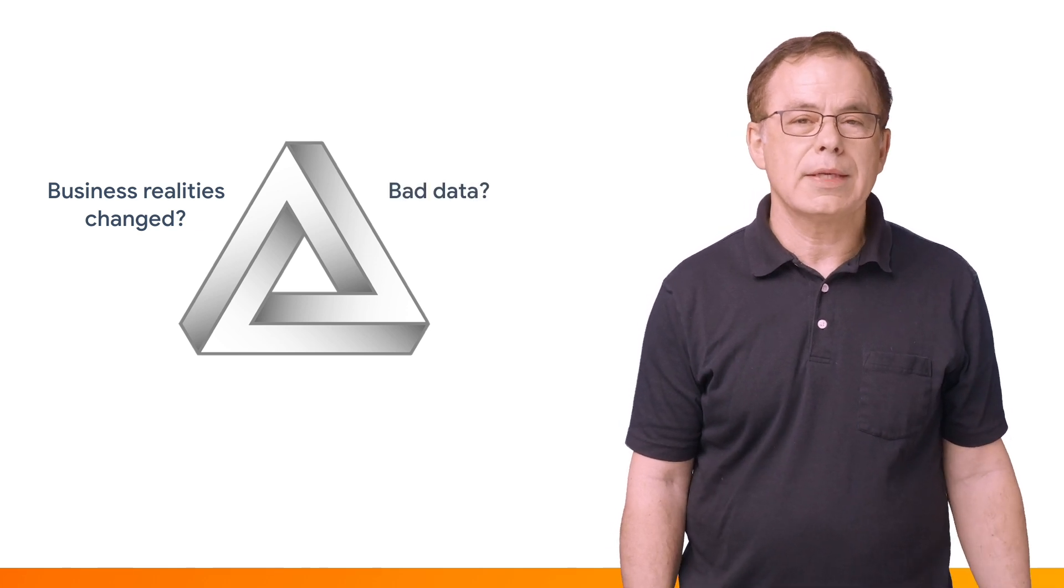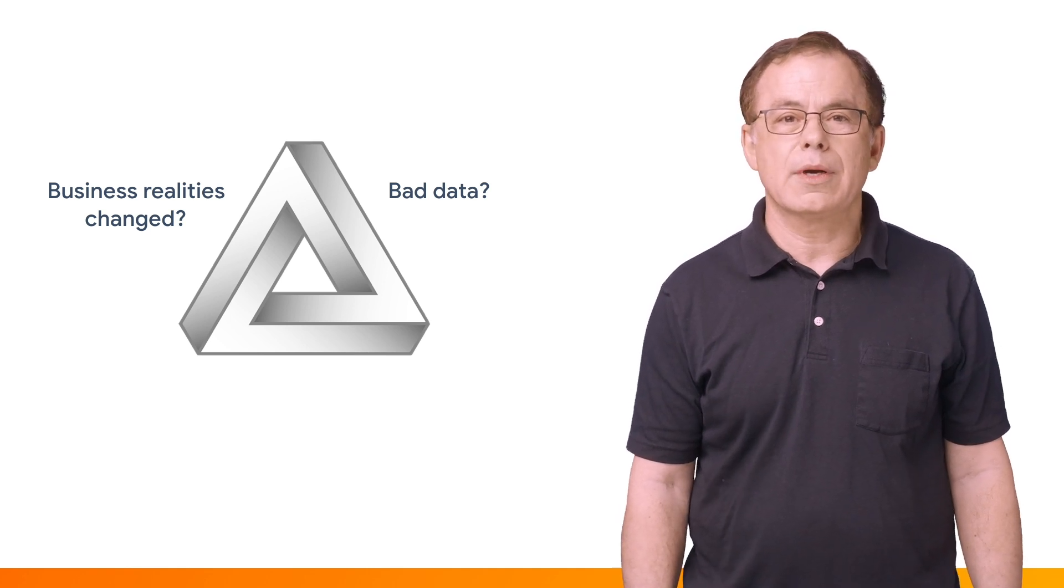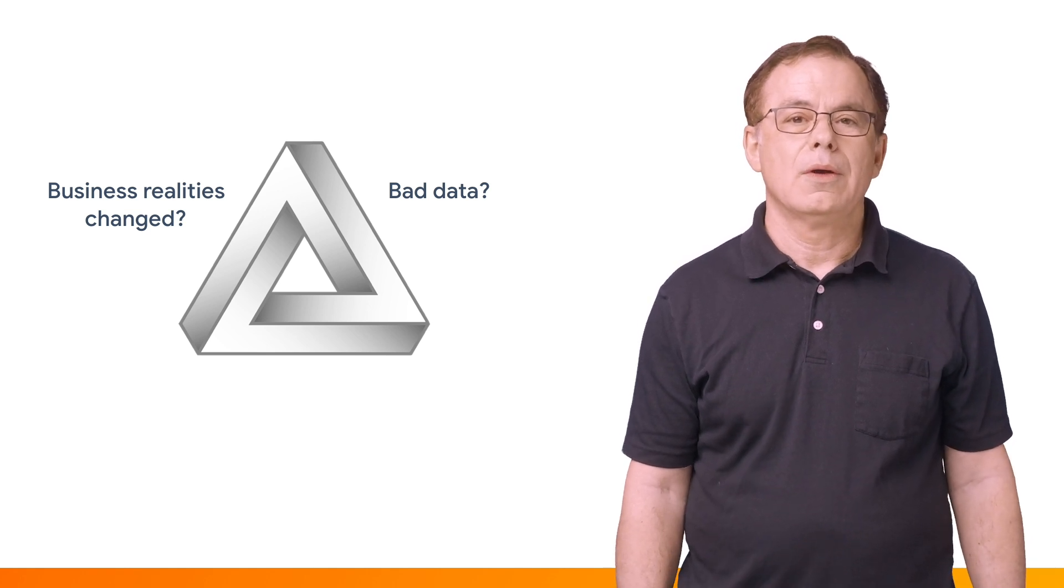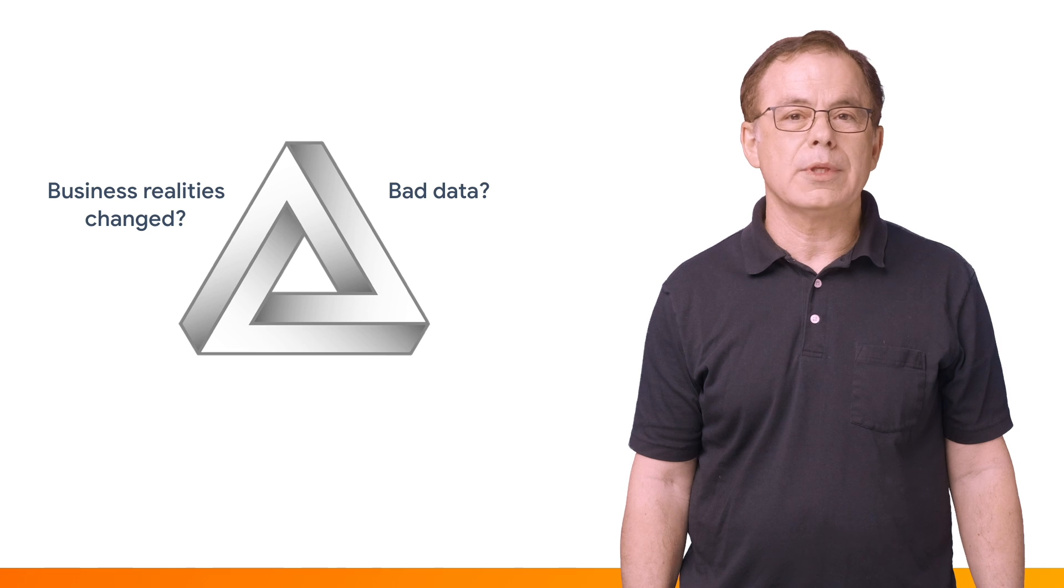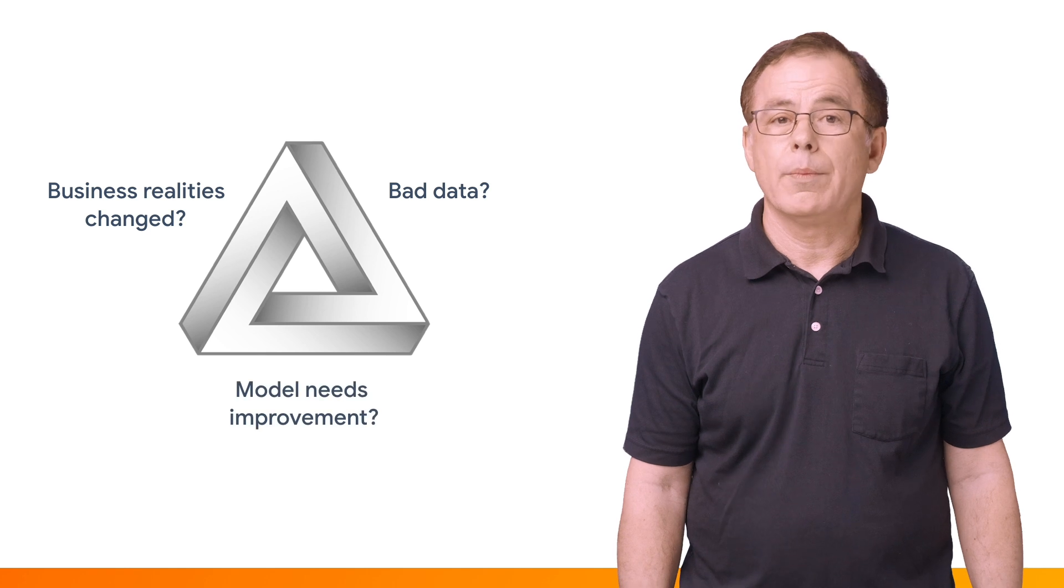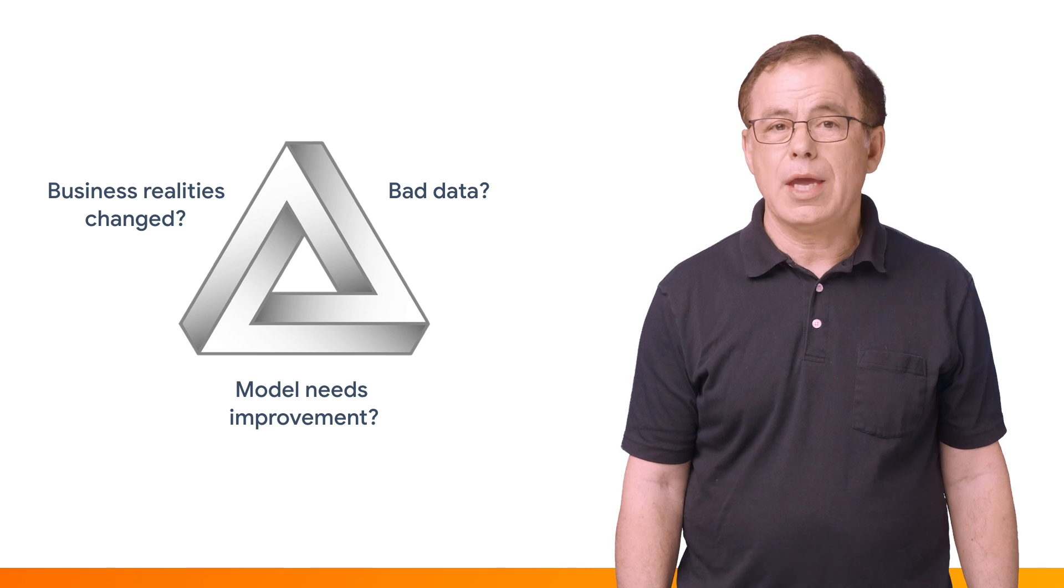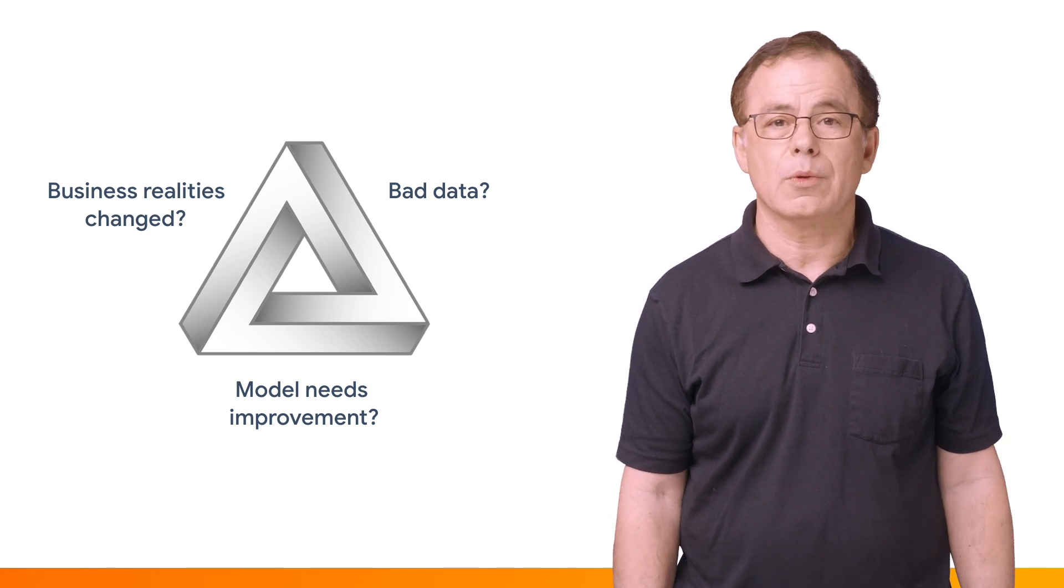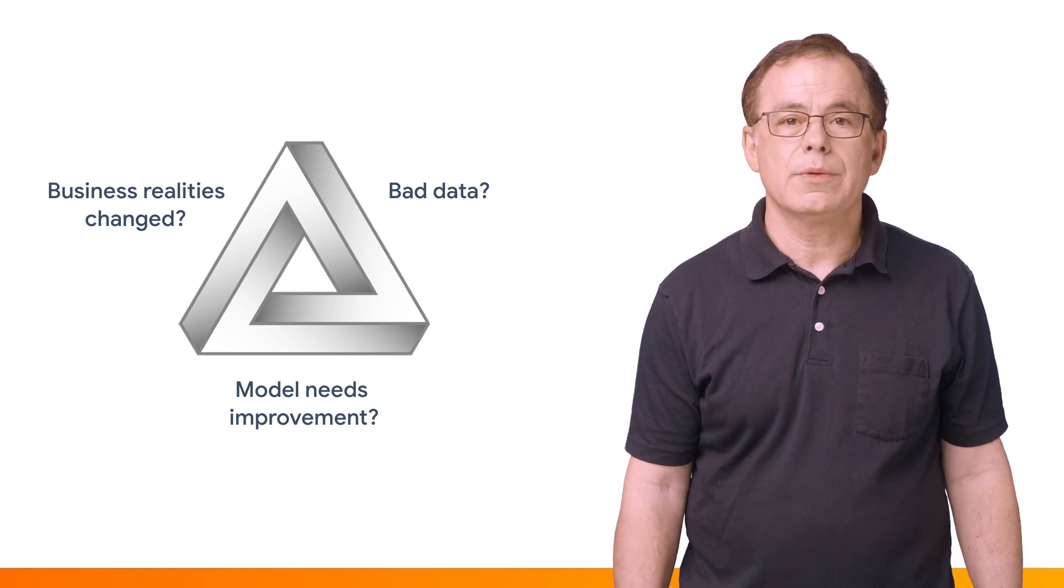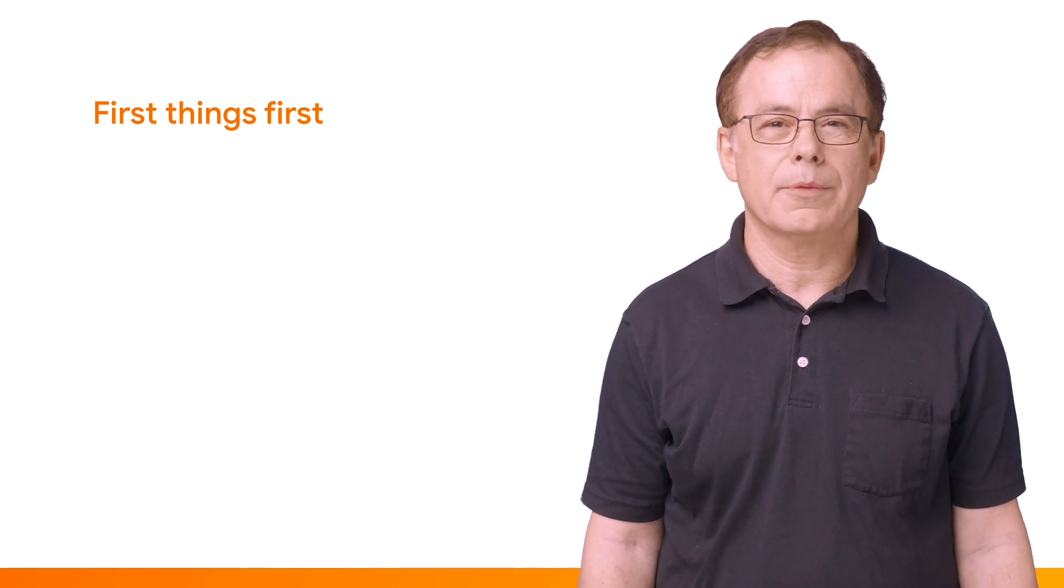Have we started getting bad data? Maybe a sensor has gone bad or a service endpoint started getting flaky. Or maybe a software update has broken something. Or maybe the feature set that we've been using isn't working for the current business conditions. Or maybe the problem really is with our model. Maybe we need to change the architecture or create an ensemble with a rules-based system. Or just retune the hyperparameters. When things go wrong, you need to start investigating to look for potential problems.